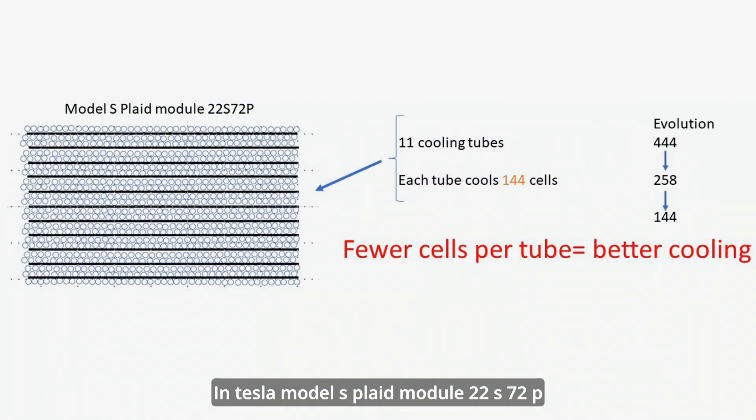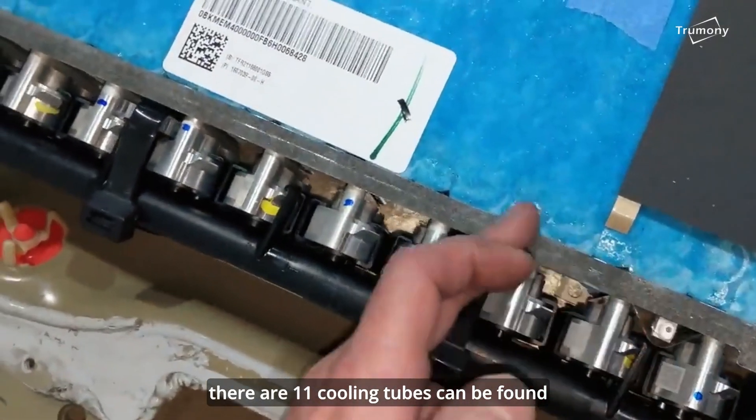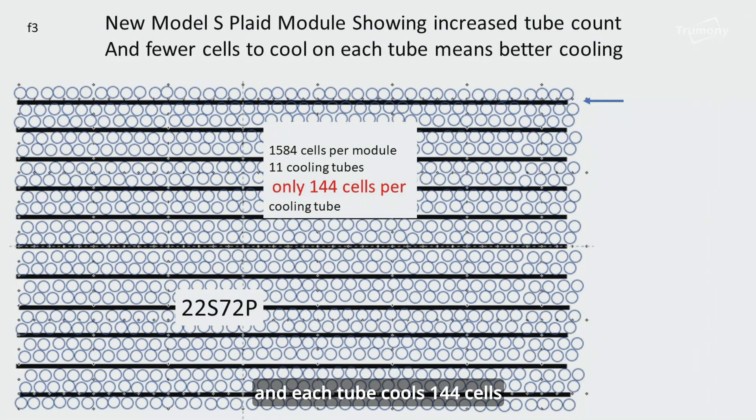In Tesla Model S Plaid Module 22S72P, the newest version, there are 11 cooling tubes. Each tube cools 144 cells.